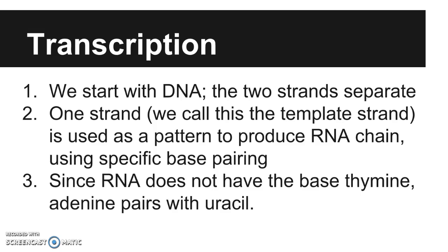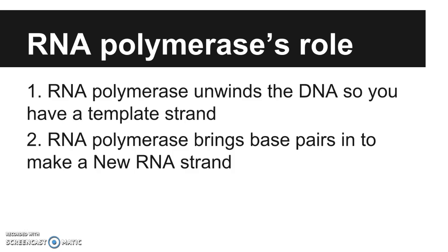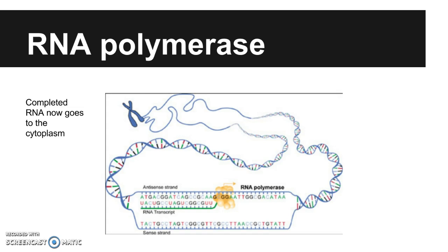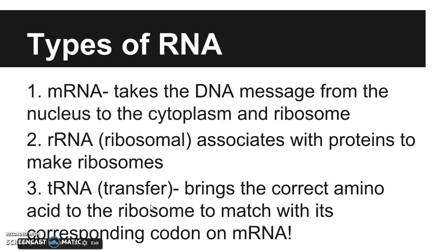Since RNA does not have the base thymine, adenine will always pair with uracil. RNA polymerase is going to unwind the DNA strand — we've split it with the helicase, now we unwind it — and we're going to bring in new base pairs to make the new RNA strand. So A pairs with U, T pairs with A, G pairs with C, and C pairs with G.